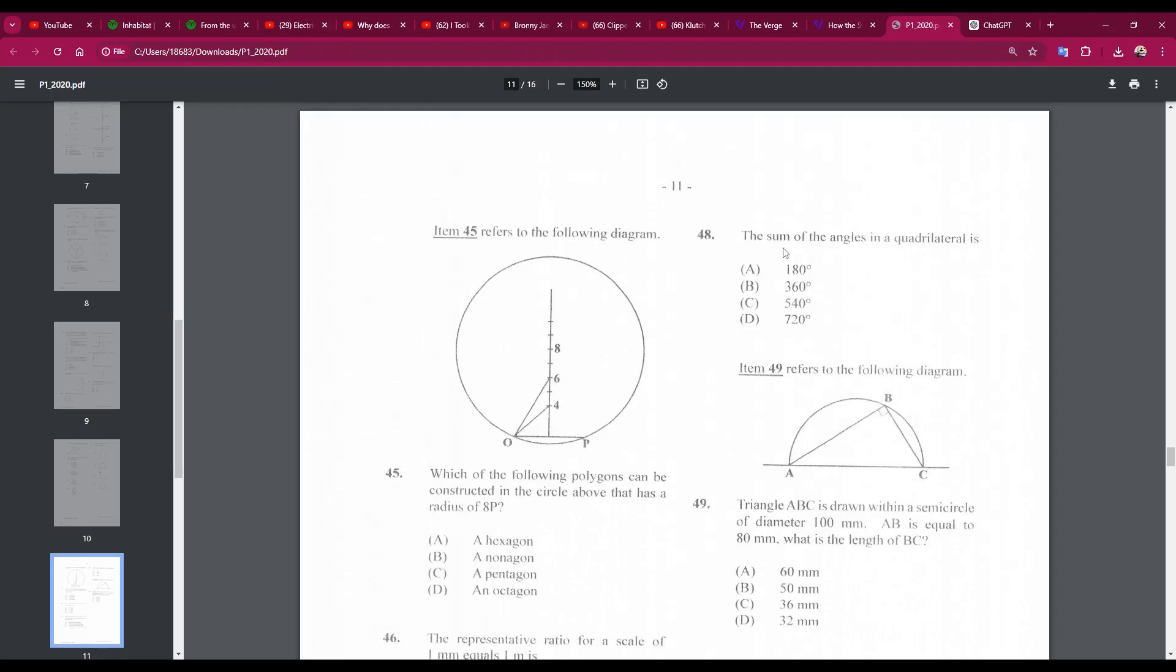Number 48: the sum of the angles in a quadrilateral is 360. All right, all the internal angles of a quadrilateral add up to 360.